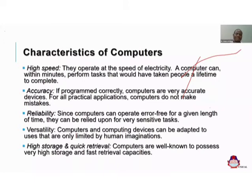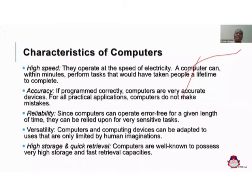The third characteristic is reliability. Because computers operate error-free, we can trust them with the most delicate of tasks. That is why they are now trusted to fly aircraft — a plane flies on autopilot for close to 75% of operations, and that is just computer software working. Computers are also used in heart surgeries and monitoring patients' heartbeats. We can count on the correctness of computer operations.